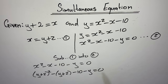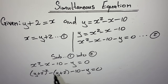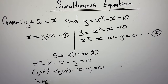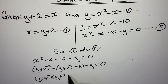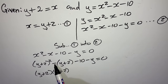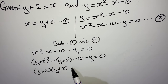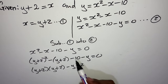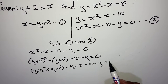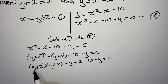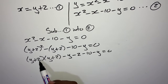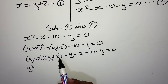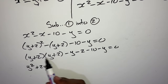Then substituting the second y value, y = 2: x = 2 plus 2 = 4. I conclude: when x was 4, y was 2. So you have solved for x and y simultaneously — you found your x value with its y value and also the second x value with its y value. This sum is done.